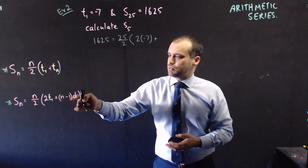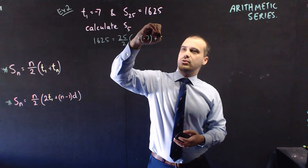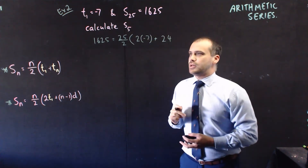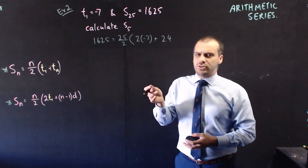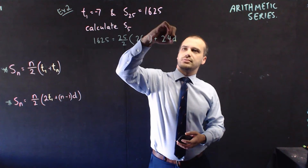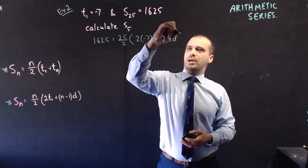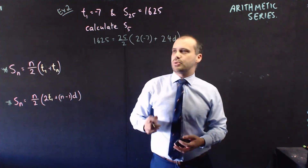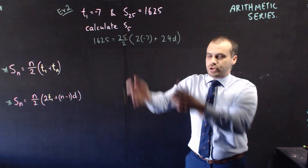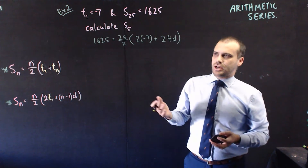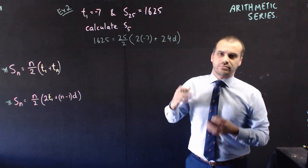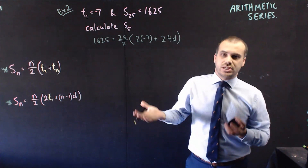Plus the number of terms — we know the number of terms was 25, so 25 minus 1 is 24. But what we don't know is the common difference. Make sure we put our brackets in the right spot.